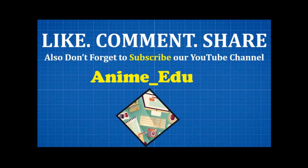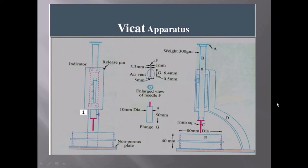This is how the standard consistency or normal consistency test of cement is conducted using the Vicat apparatus. The Vicat apparatus comes with three kinds of attachments: one is a plunger as shown in the video, a square needle, and a needle with an annular collar. This is the Vicat mold, and here you can see the square needle which is fixed on the apparatus.